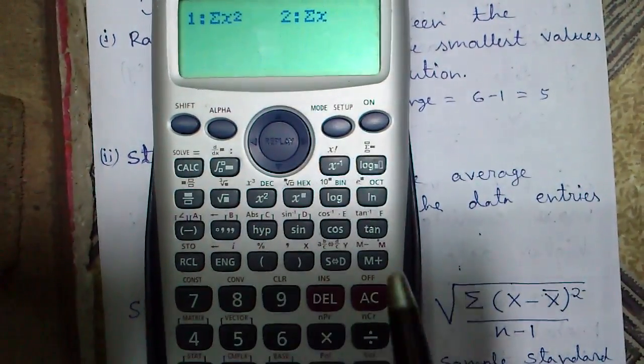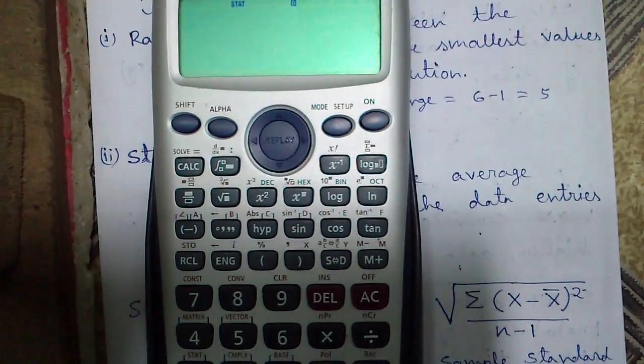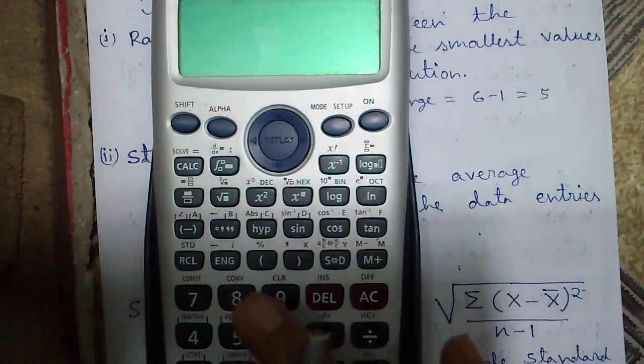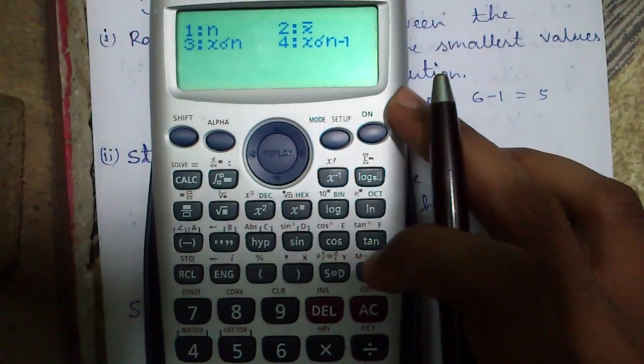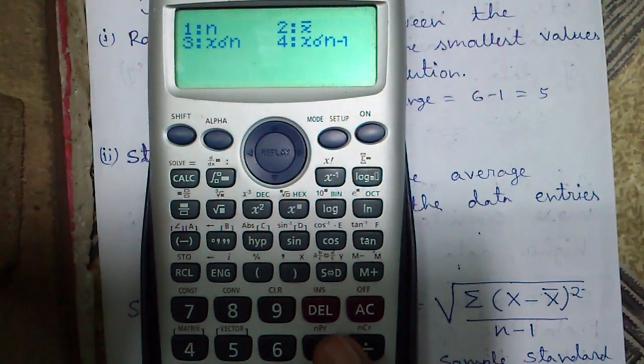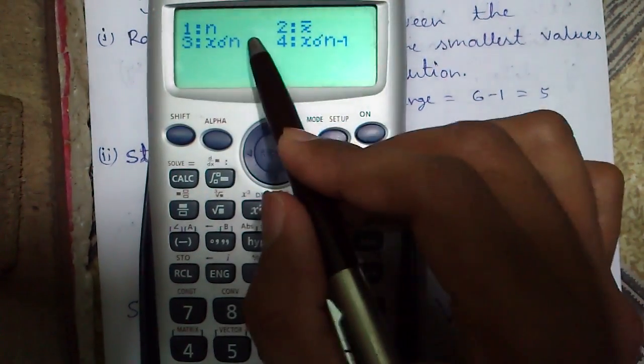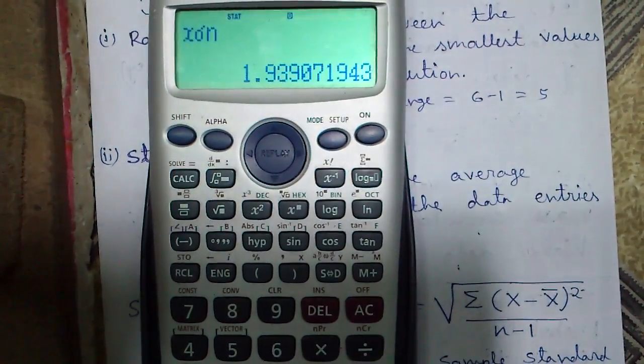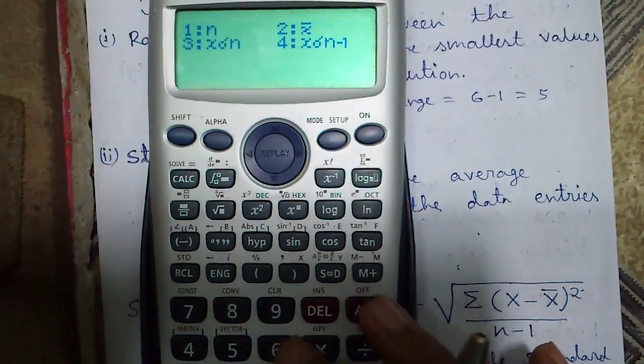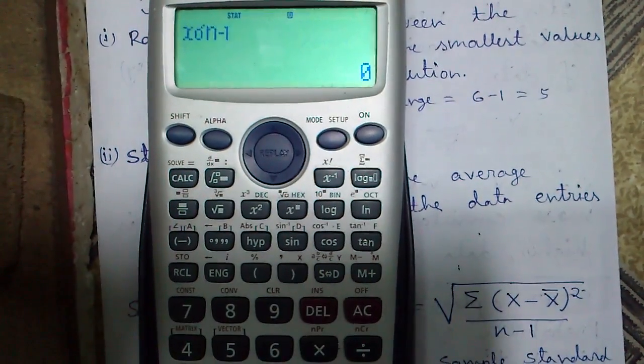Number 4 is sum. Let's find out sum of x squared. Number 5 is variation mode. Let's find out mean. Number 2. Proper standard deviation, sum of standard deviation.